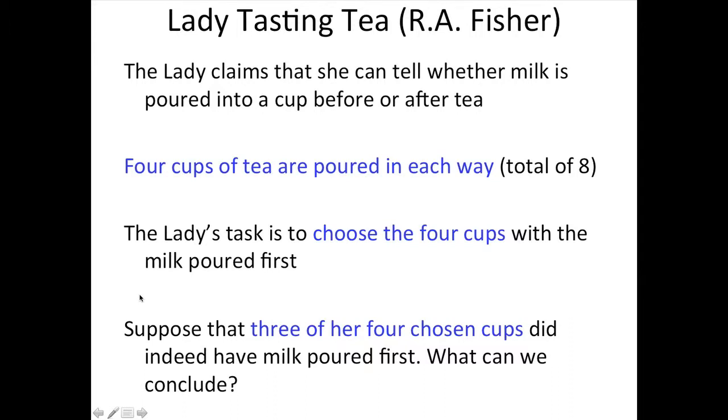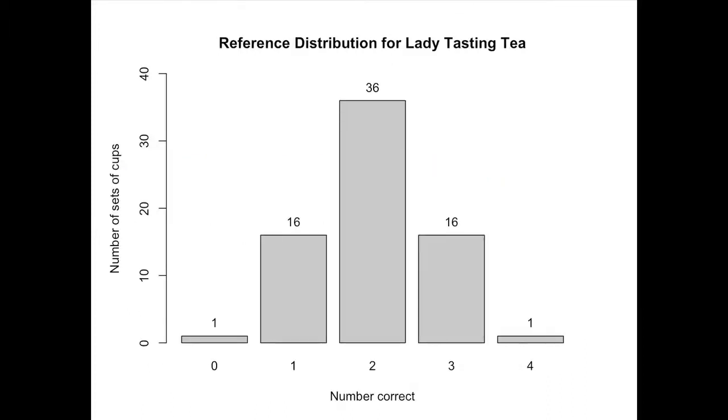Here's our setup: The lady claims that she can tell whether milk is poured into a cup before or after the tea is poured. We have four cups of tea poured in each way for a total of eight cups, and her task is to choose the four cups that have the milk poured first. Suppose that three of her four cups did indeed have the milk poured first. What do we conclude?